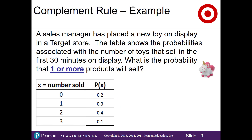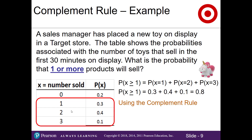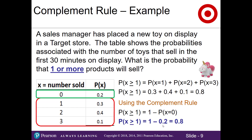Using the same Target store example, we now want to know the probability that one or more products will sell. Using the addition rule we can add 0.3 plus 0.4 plus 0.1 to get 0.8. With the complement rule we get the same answer faster: the complement of one or more is zero products sold, so we take 1 minus 0.2 and get 0.8 — the same answer, but quicker.